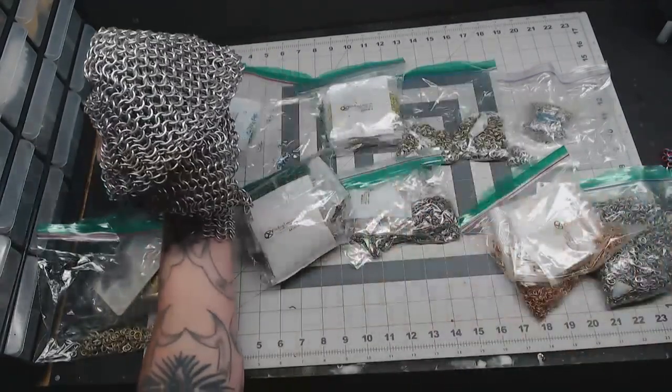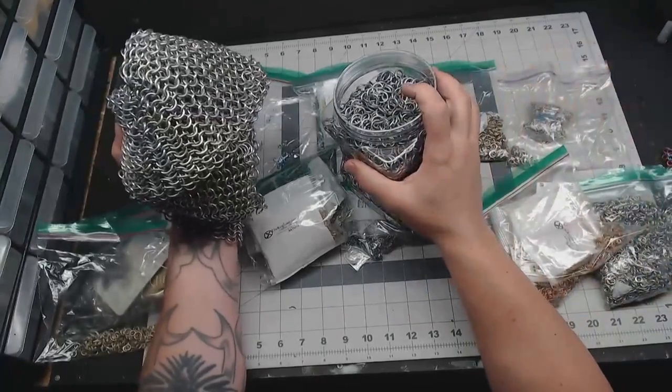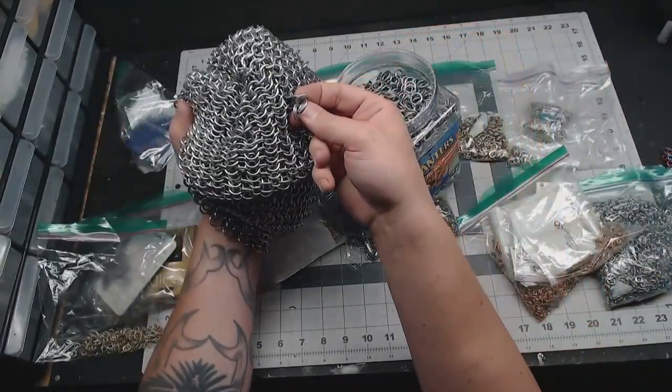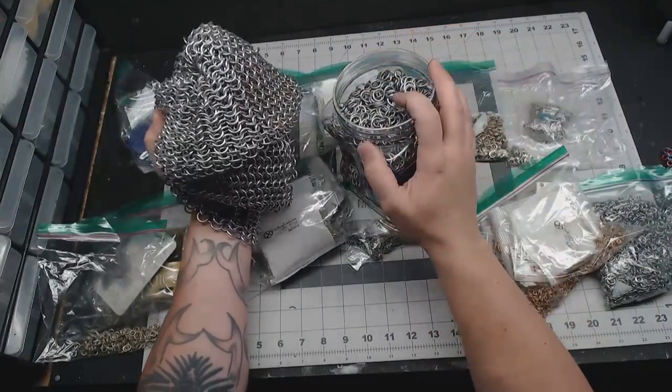So for this video we're going to do a good old classic European four-in-one. I'm out of aluminum rings so we'll use the galvi. It's dirty, stinky, and not as shiny, but it is strong.